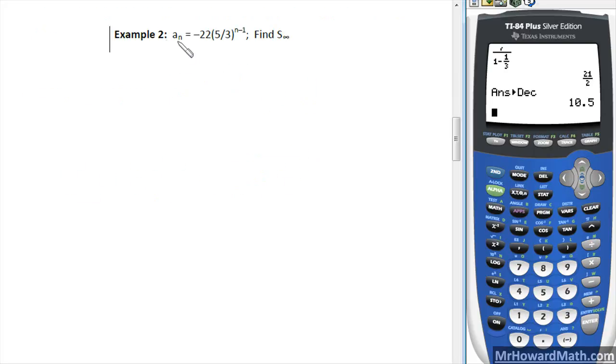Now for example 2, we're trying to decide, does this converge or diverge? So it's all about the r value. The r value is always the part raised to the exponent, so the r value is 5/3. This geometric pattern has an r value of 5/3. 5/3 is greater than 1, so this one diverges, and that is our answer. We stop there, we say that this geometric series would diverge, and we are done.